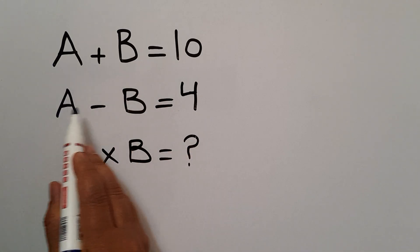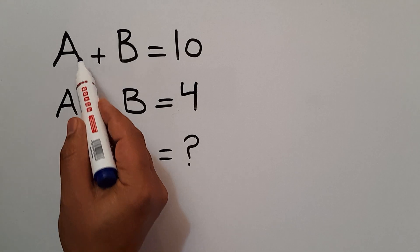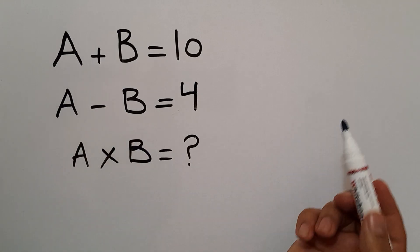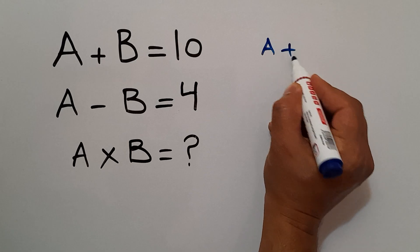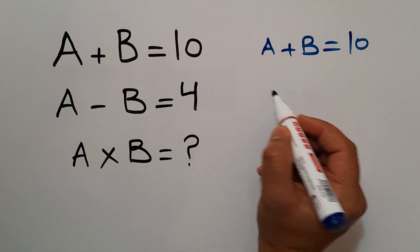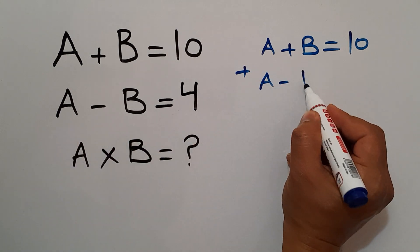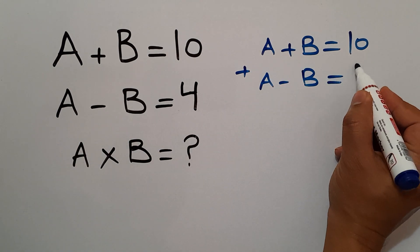We have two equations and two unknowns. Let's add these two equations together. So we have A plus B equals 10 plus A minus B equals 4.